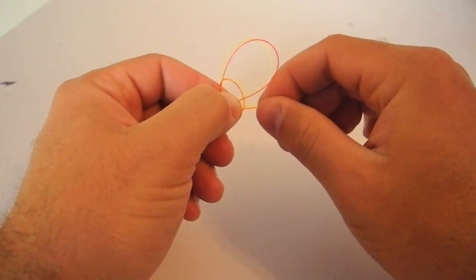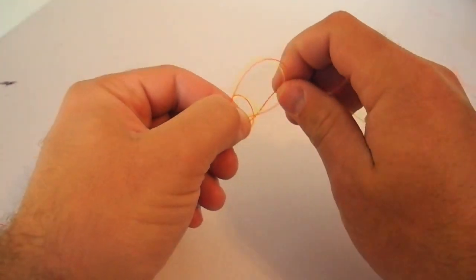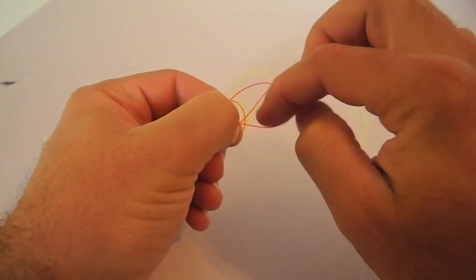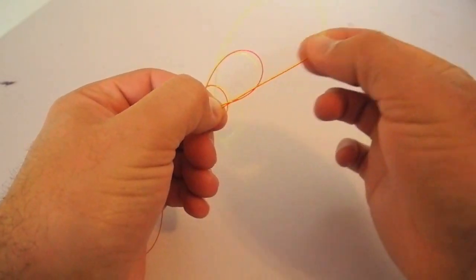Then what you're going to do is you're going to take the tag end of that leader and your tippet and you're going to kind of jam it in your thumb so it's right underneath your large loop. All I'm going to do is I'm going to reach in there and pluck both of them through.